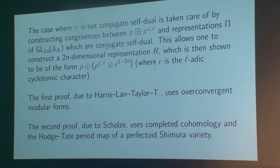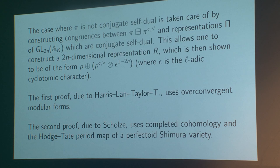Two unconditional instances of this strategy have been given. The first was due to Michael Harris, Carmen Lan, Richard Taylor, and myself, carrying out the strategy using overconvergent modular forms. Shortly after, a second proof was given by Peter Scholze, using many of the techniques he alluded to in his plenary lecture — in particular the Hodge–Tate period map defined on the perfectoid Hodge–Moore variety at infinite level. He was able to go much further: he proved not just this, but also the existence of Galois representations attached to torsion classes in curve cohomology.